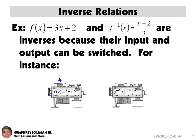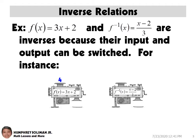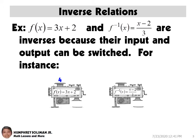The first thing we need to know is inverse relations. By switching the input with the output of each ordered pair in the original relation, the result will be the set of ordered pairs for the inverse relation. You can see the function machines below as examples. These functions are inverses because their input and output can be switched.